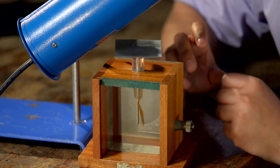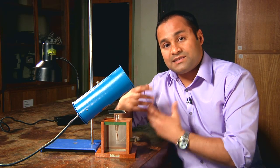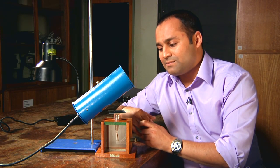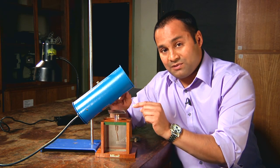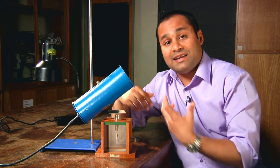You can see that the gold leaf immediately starts to fall. And that must mean that the UV light is somehow discharging the electroscope. We know that we started with negative charge on the plate. So the UV light must somehow be releasing the electrons.